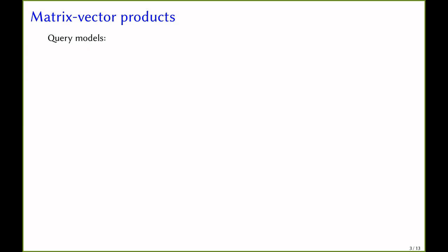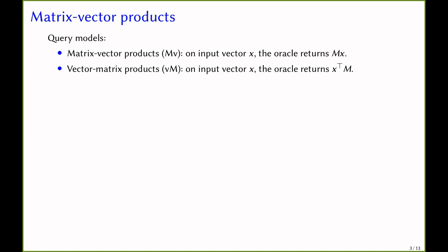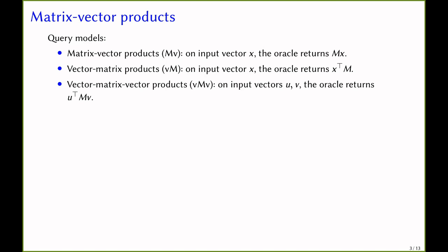In this talk, we focus on specific query models which are called matrix-vector products. There are three variants we will discuss. The first is the matrix-vector product (MV): on input vector x, the oracle returns M times x. The second is the vector-matrix product (VM): on input vector x, the oracle returns x-transpose times M. The third is the vector-matrix-vector product (VMV): on input a pair of vectors u and v, the oracle returns u-transpose times M times v.